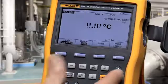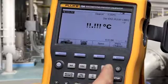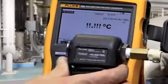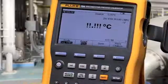To measure pressure, select pressure via the pressure button and make a connection to one of the fluke pressure modules.